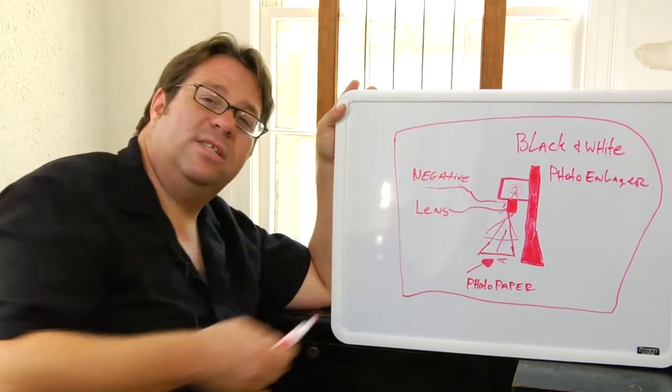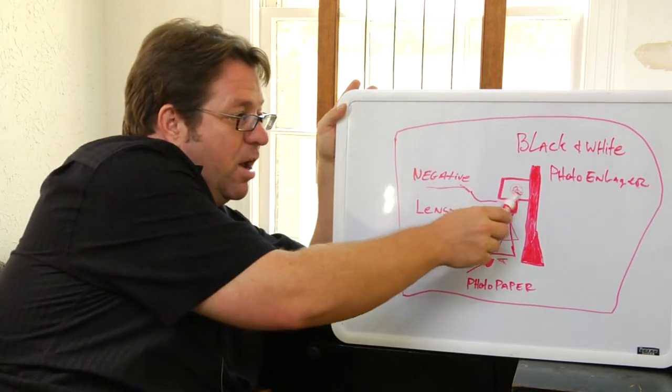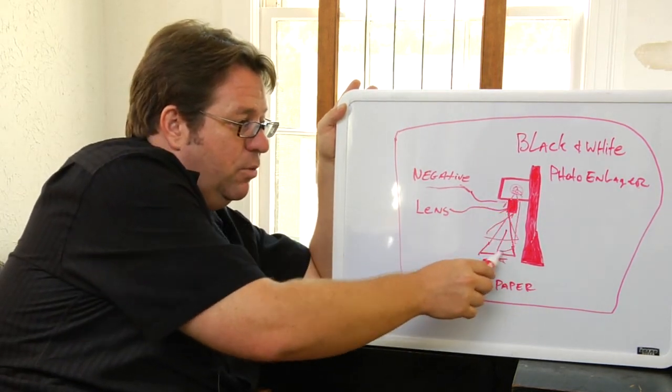An enlarger also has a timer. There's a certain amount of time that you put that enlarger light on for, shining through onto your paper.